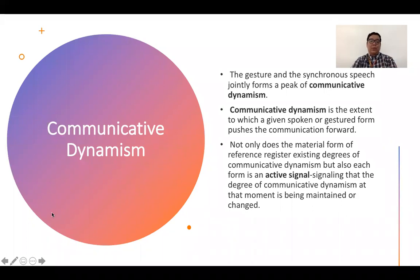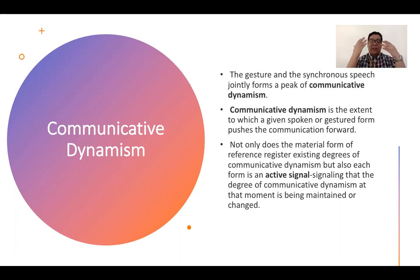We also have the concept called communicative dynamism. The gesture and the synchronous speech jointly form a peak of communicative dynamism. Communicative dynamism is the extent to which a given spoken or gestured form pushes the communication forward — it is the gauge, the indicator of how far the communication has progressed given the certain signals used in the discourses. Not only does the material form of reference register existing degrees of communicative dynamism, but each form is also an active signal, signaling that the degree of communicative dynamism at that moment is being maintained or changed.